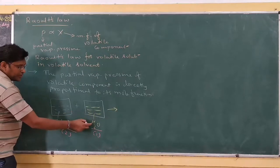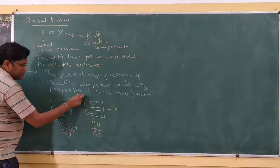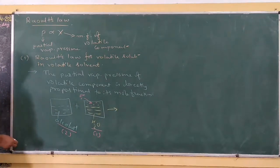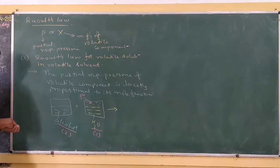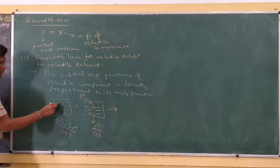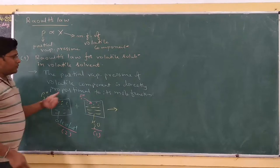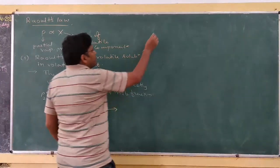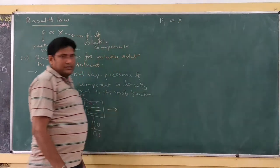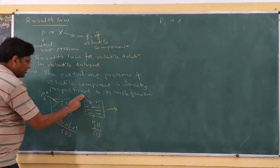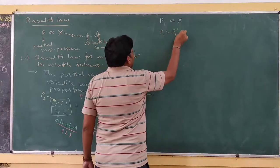Whatever the vapor pressure created by the water, we can say it is P1°. For the alcohol, whatever the pressure created by the alcohol, we can say it is P2°. According to Raoult's Law, the partial vapor pressure of water is directly proportional to its mole fraction, and P1 is equal to P1° times x1.